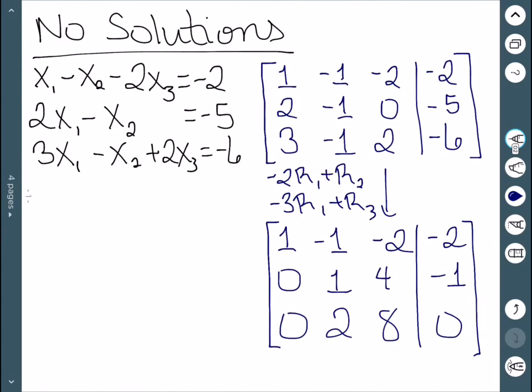For the third row, negative 3 times 1 plus 3 is 0. Negative 3 times negative 1 minus 1 is 2. Negative 3 times negative 2 plus 2 is 8. And finally, negative 3 times negative 2 minus 6 is 0.